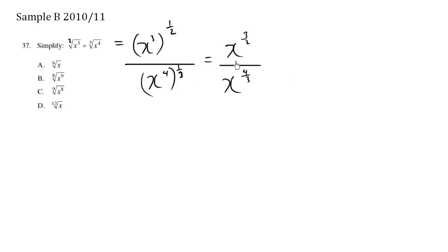And this is how we're allowed to use exponent laws. When we have the same base and we're dividing, we subtract the exponents. We have x to the 3/2 minus 4/3. And we can rewrite these exponents by finding the LCM.